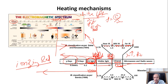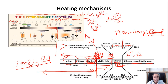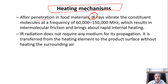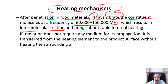But the radiation from infrared onwards to the right is called non-ionizing radiation — the energy is not high enough to make an atom into an ion. The heating mechanism of infrared: after penetration into the food material, the infrared rays will vibrate the constituent molecules in the food at high frequency, and the vibration will cause intermolecular friction, which will generate internal heat to heat up the food.